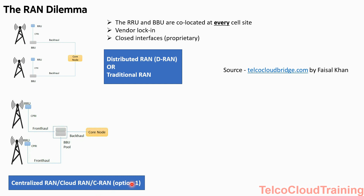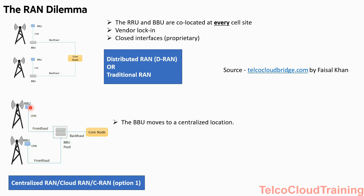Then came something called Centralized RAN, or Cloud RAN, or CRAN — Option 1. What we have achieved here is the BBU moves to a central location. Every cell site still has an RRU because RRU is pure hardware, but the BBU — which was the software or control card in the cabinet — has now moved to a central location. We now have a pool of BBUs at one central location. There is an introduction of a new interface called fronthaul between the RRU and the BBU pool.